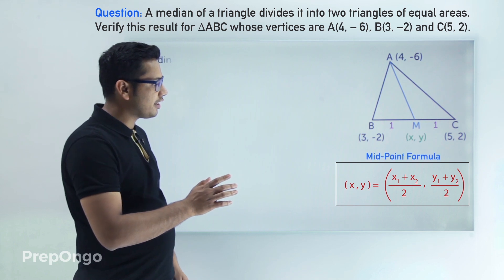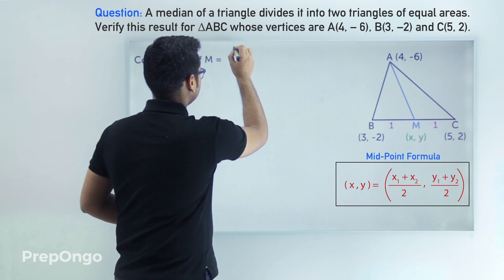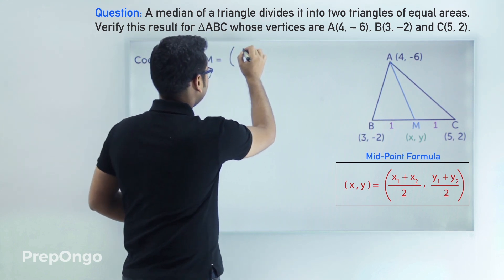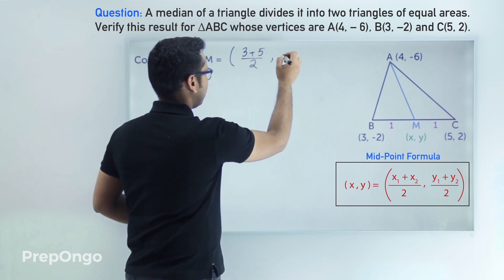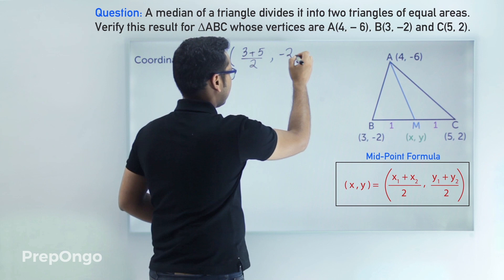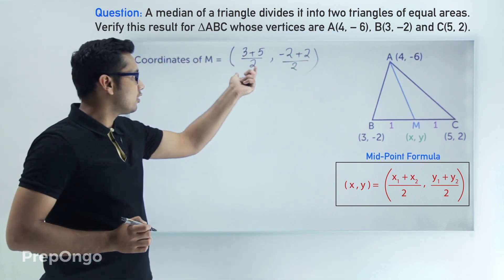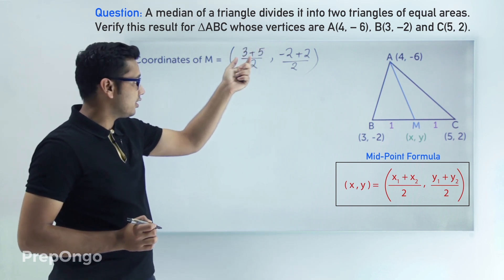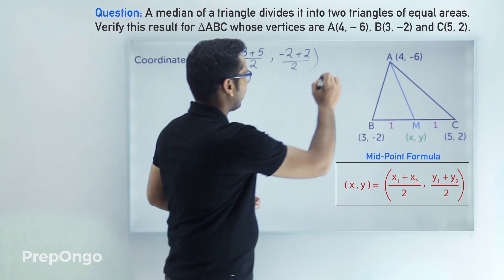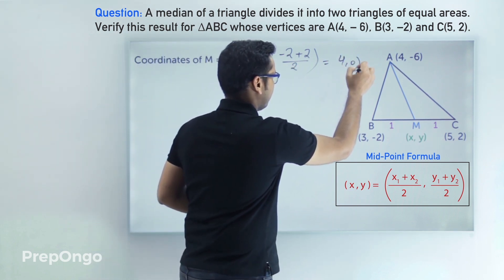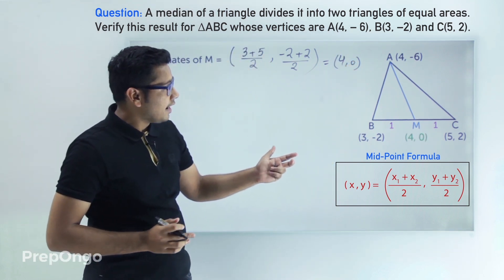Applying the midpoint formula: x = (x1 + x2) / 2 = (3 + 5) / 2, and y = (y1 + y2) / 2 = (-2 + 2) / 2. Solving: 8/2 = 4, and the y-term comes out to 0. So the coordinates of point M are (4, 0).